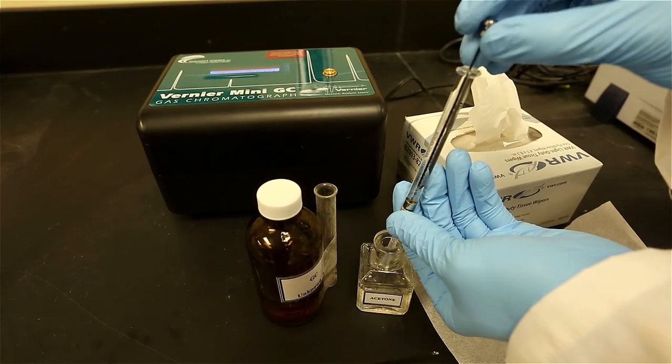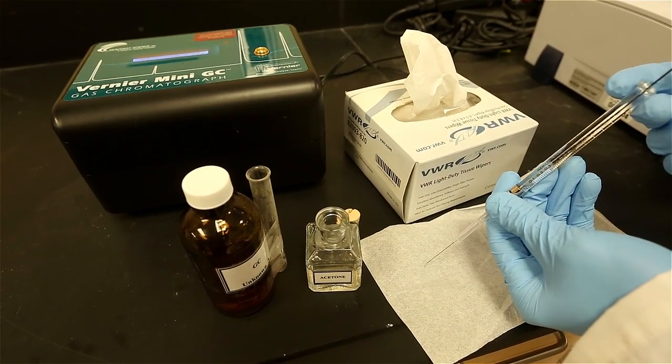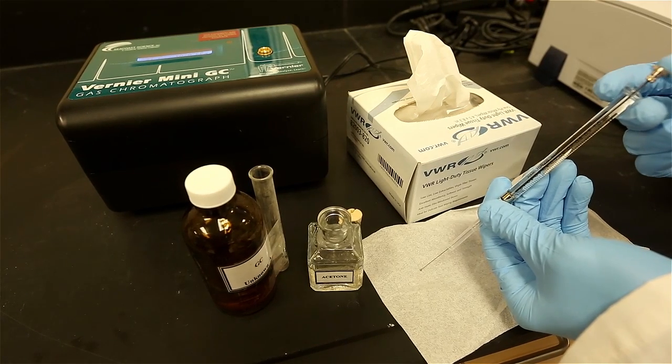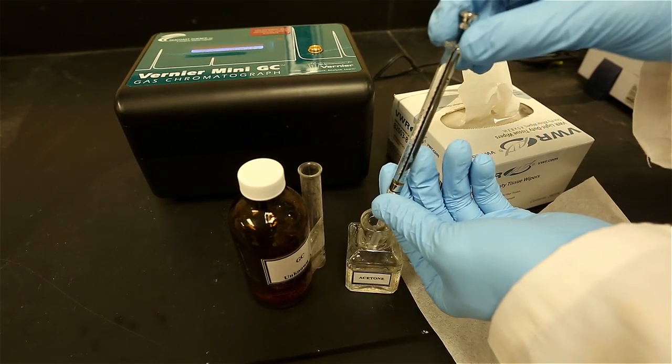Start by cleaning the barrel by filling it one-third full with acetone, then expel on a Kimwipe. Repeat this process two to three times. Never inject water or solids into the gas chromatography instruments because they will clog and destroy the column.